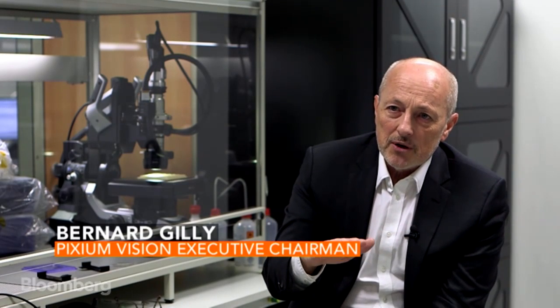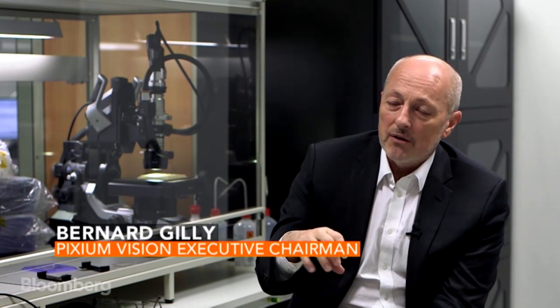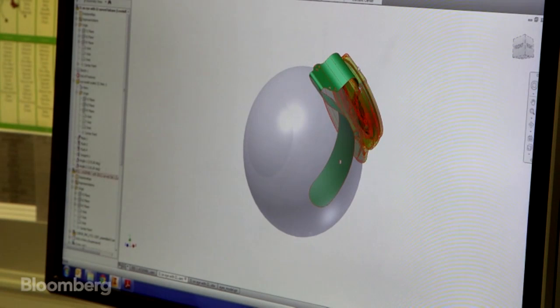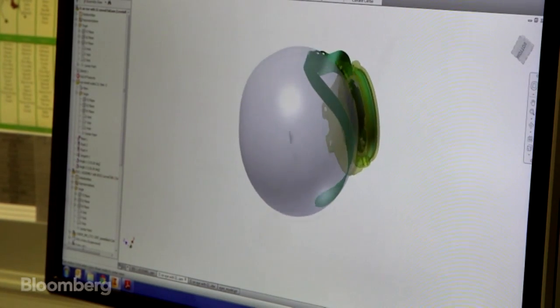We have developed a completely different camera system, which is an event-based camera. We call this a neuromorphic camera because it really works like the retina. And also the number of electrodes, where they have 60, we are going to have 150. Then you will have a better resolution.